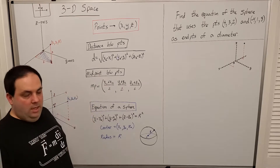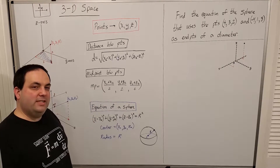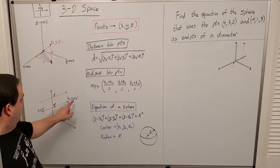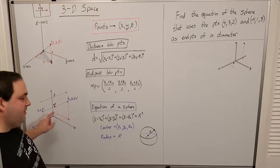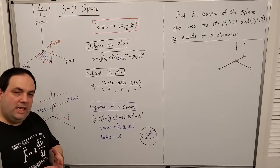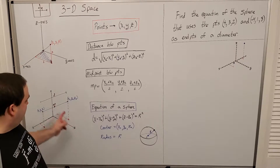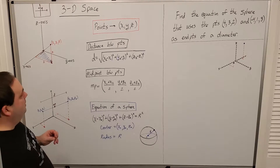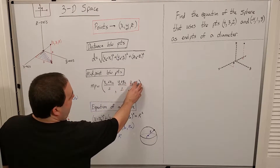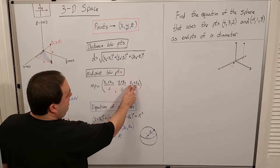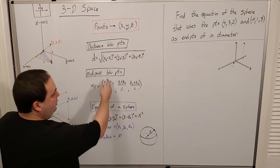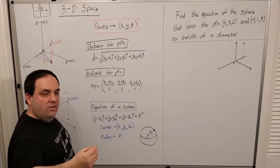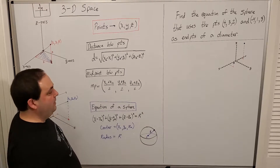The midpoint is not any different in concept. If I want to find the point that exactly bisects the line segment connecting two points, all I'm doing is adding in a third dimension of the same calculation. I should get three coordinates because it's a midpoint in three-dimensional space.